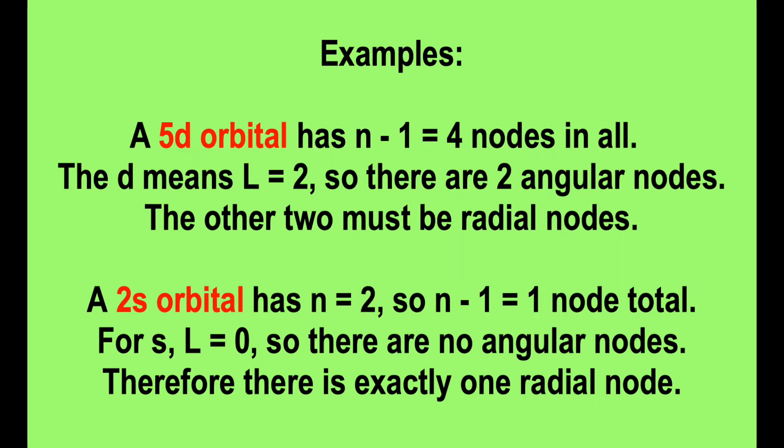Now for examples. A 5d orbital has 5 minus 1, 4 nodes in all. The d means L equals 2, so there are two angular nodes. The other two must be radial nodes.